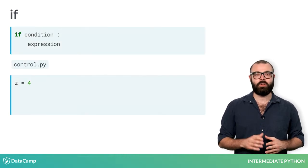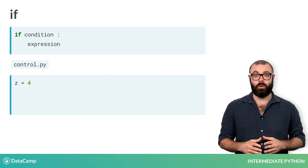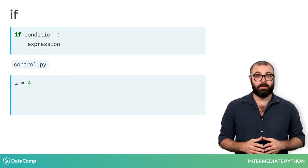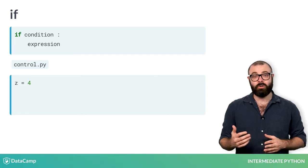Let's start working in a script, control.py. Suppose you have a variable z equal to 4. If the value is even, you want to print out z is even. This code does the trick.